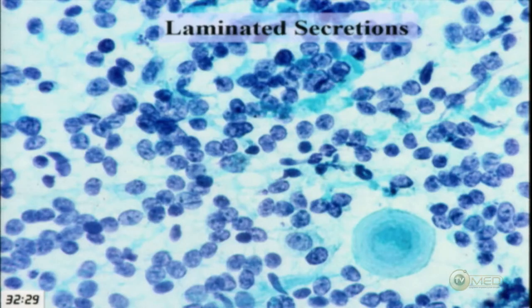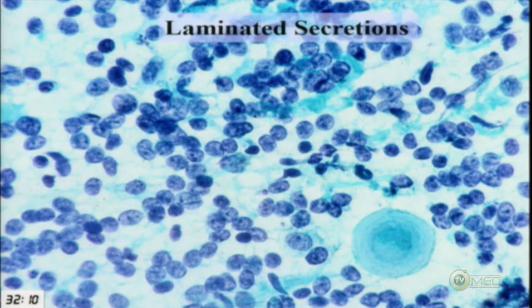At higher power, we see cells with abundant pale cytoplasm and secreted material. At first you might think it resembles the matrix of adenoid cystic carcinoma, but it's different — it's concentrically laminated, almost like a psammomatous calcification but more proteinaceous. So the secretion is different from matrix-producing tumors.